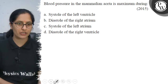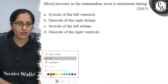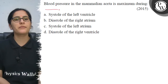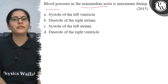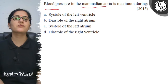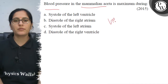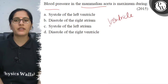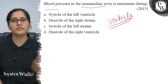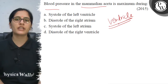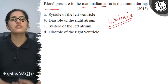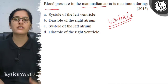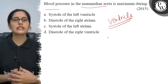In the question, we have said that blood pressure in the mammalian aorta is maximum. When there is high pressure or contraction stage in the ventricle, which we call the systolic state.